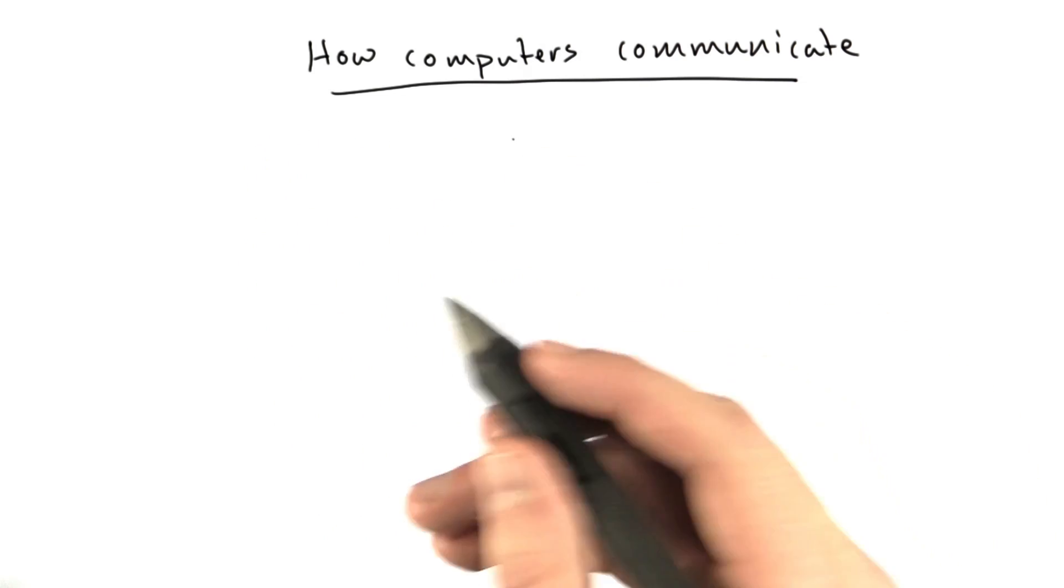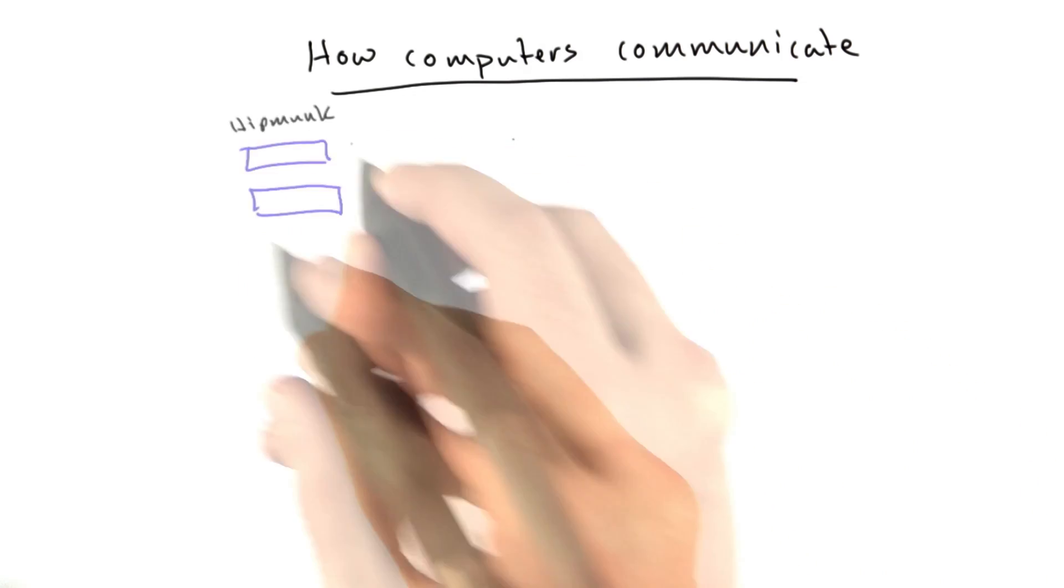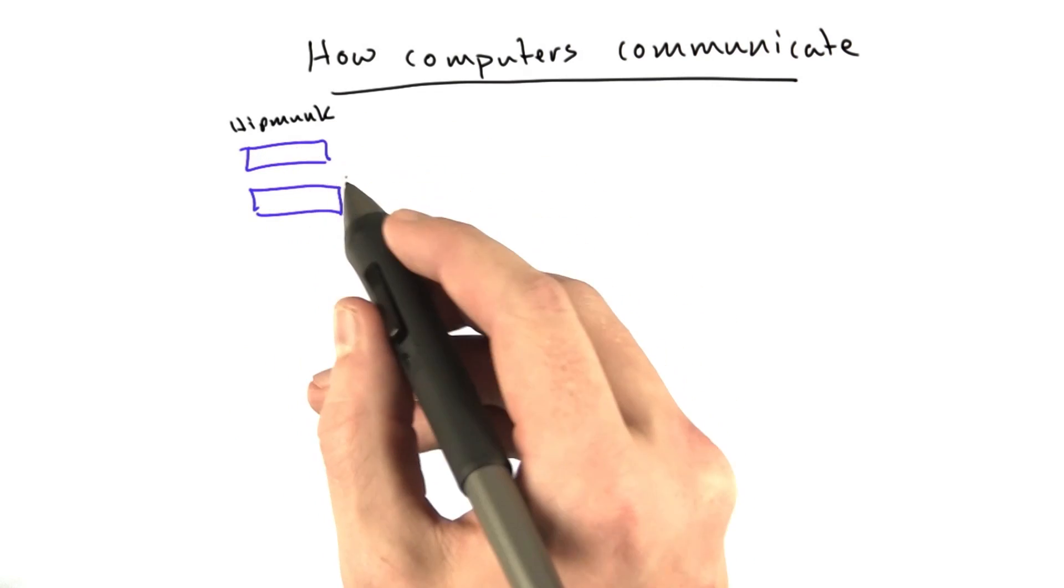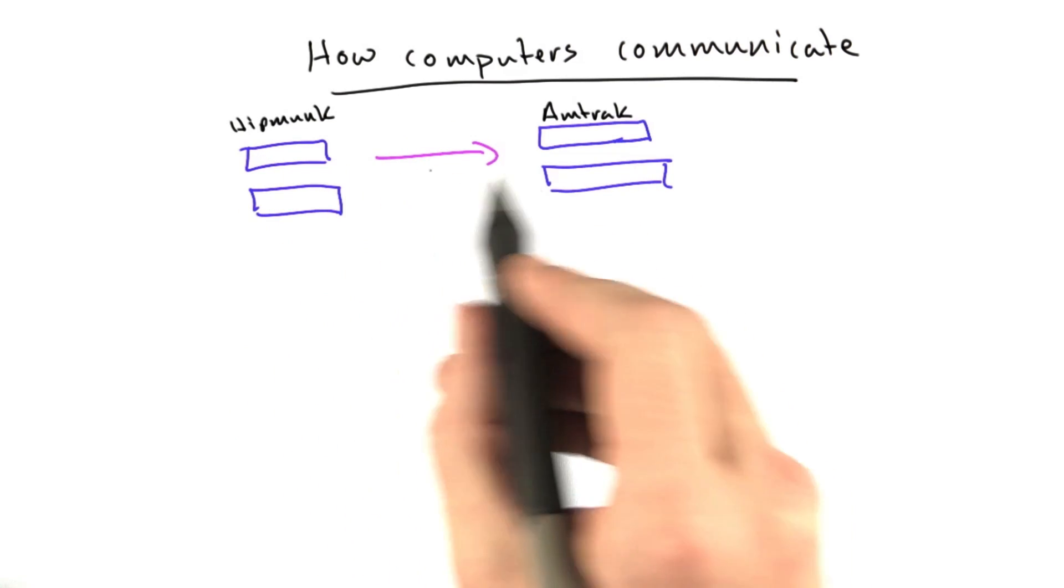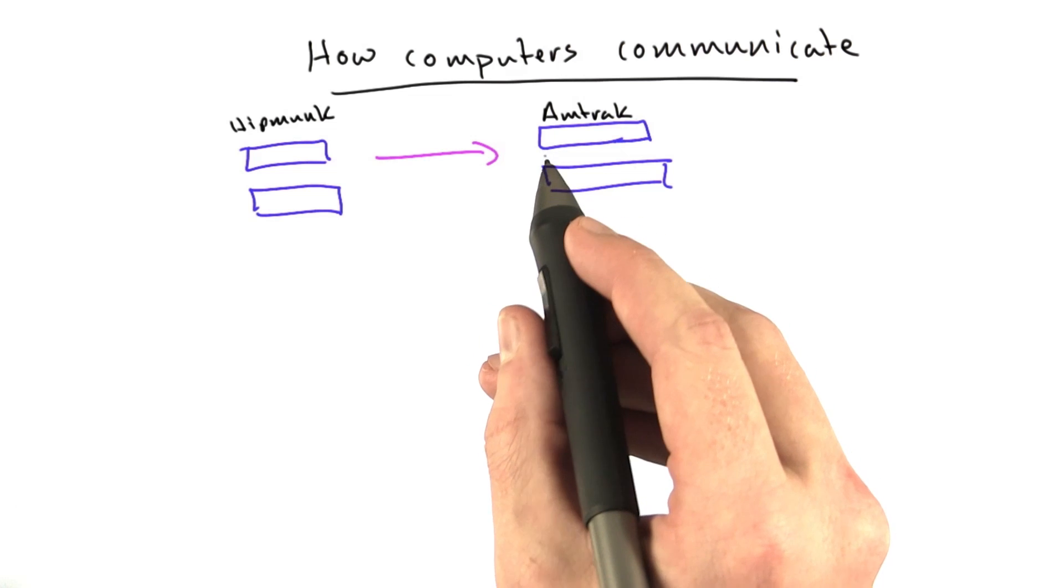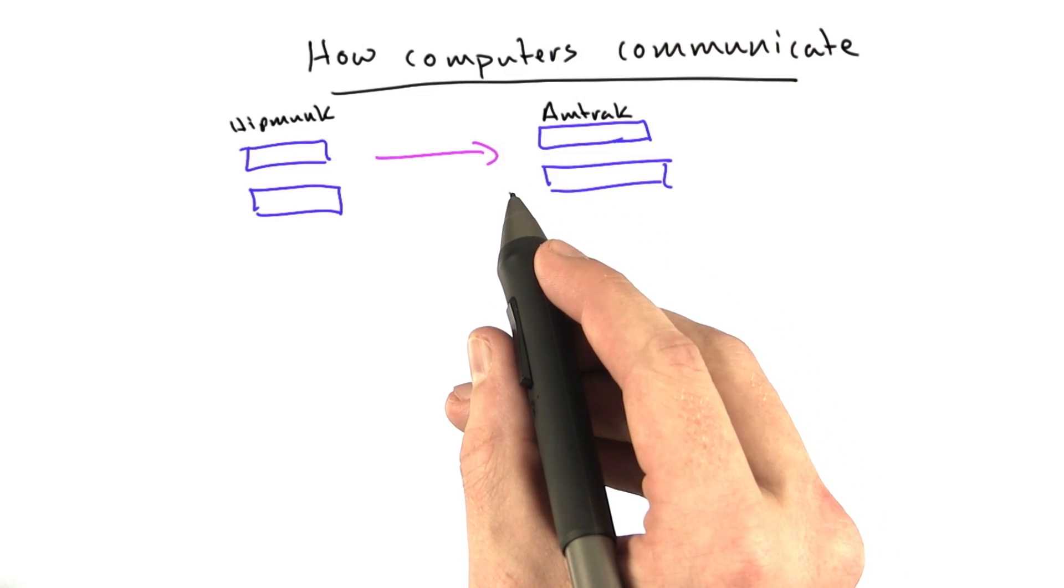What I'd like to talk about now is what we actually send over the wire between two computers. We could have our servers, in this case we'll use the Hipmunk example, make requests to Amtrak and receive HTML back from them.